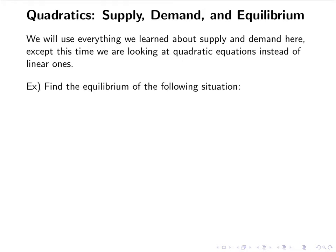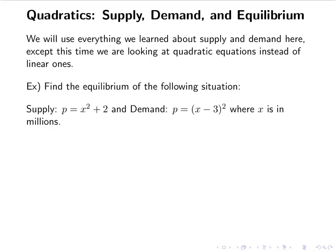So find the equilibrium of the following situation. The supply is p equals x squared plus 2, and the demand is p equals x minus 3 squared, where x is in millions. Before we had q for quantity, but the book changes back to x, so we're going to have x for quantity and p for the price. Our supply is going to be x squared plus a number, and our demand is going to be x minus a number squared.